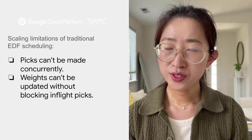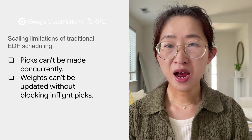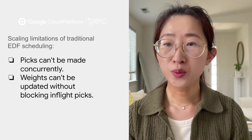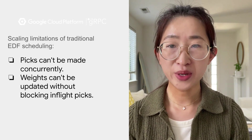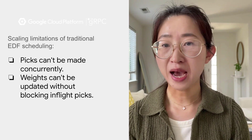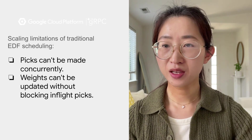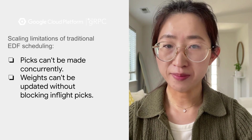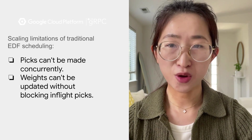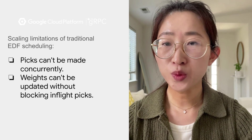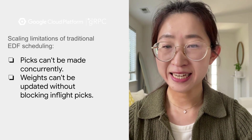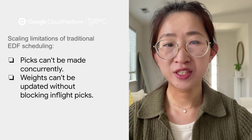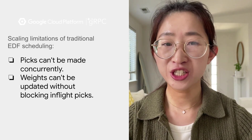This algorithm is straightforward and works. However, there are certain scalability limitations. For example, we cannot pick backends concurrently, and weights cannot be updated in-flight. Google engineers internally came up with a new algorithm based on observations of running this algorithm. The improved algorithm is called static stride scheduling. It's very simple, but it overcomes the limitations of earliest deadline-first.